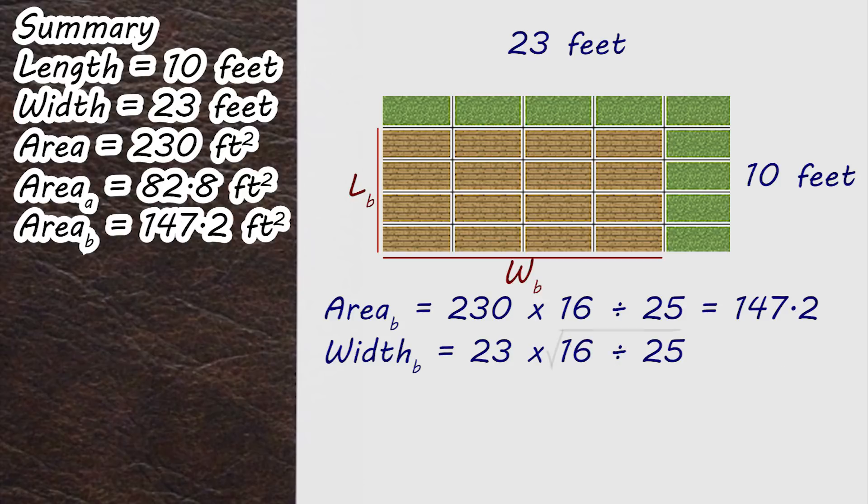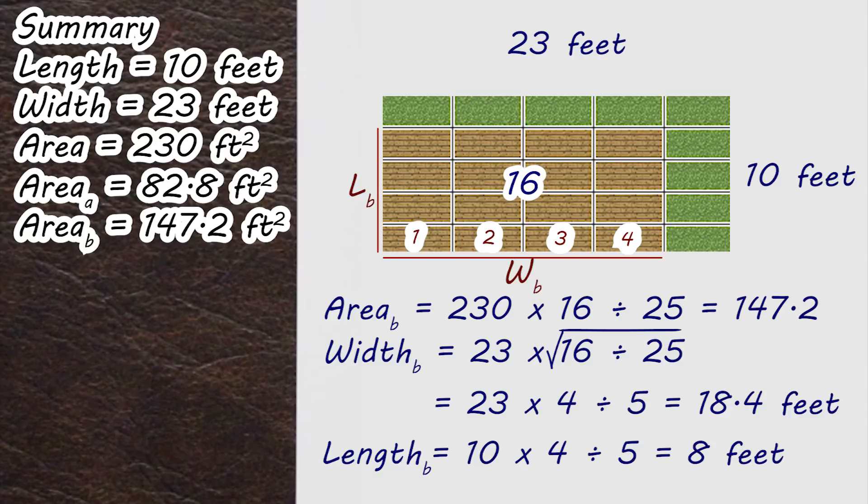We actually need to look at the square root of our factor, so our 16 over 25 becomes 4 over 5. You can see this in the drawing as our 16 rectangles each take up 4 of the 5 along each side. So we end up with our final sides being 8 and 18.4 feet.